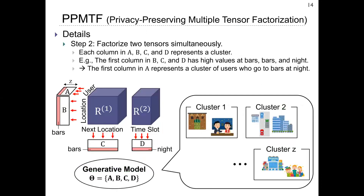Then we factorize the two tensors simultaneously. Here, A, B, C, and D are called factor matrices, and each column in A, B, C, and D represents a cluster. For example, in this figure, the first column in B, C, and D has high values at specific locations and time periods — for instance, night. The first column in A then represents a cluster of users who exhibit that pattern. So there are Z clusters in this example, and the clusters are automatically found from training traces.